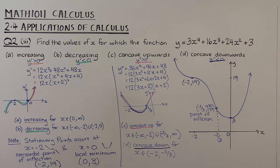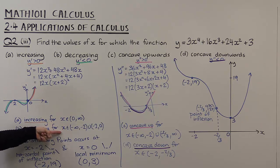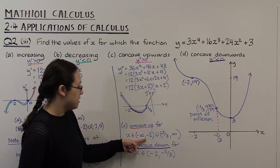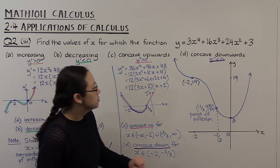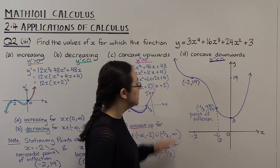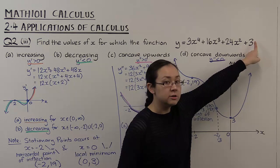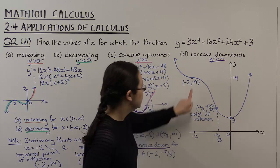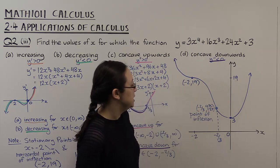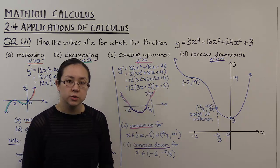So we've answered the question. We've said when this quartic is increasing and when it's decreasing. We've said when it's concave up and when it's concave down. And further, we've drawn a sketch of that function — we can see when it's decreasing, when it's concave up in two sections, and when it's concave down in the middle section. That's question 2, part 3.